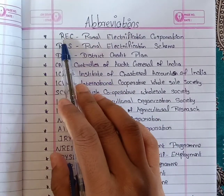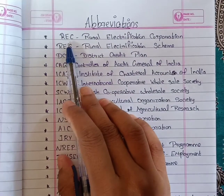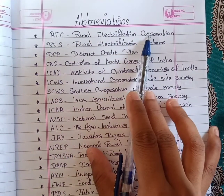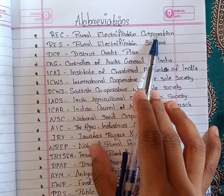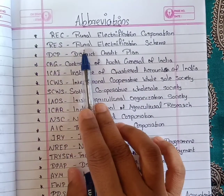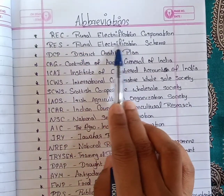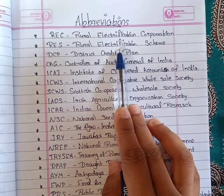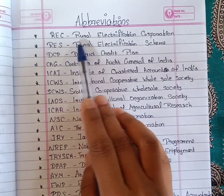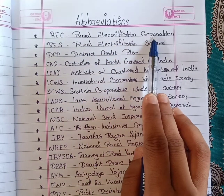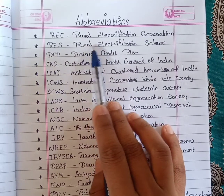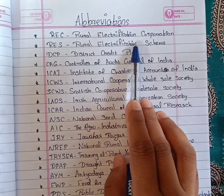The first abbreviation is REC — Rural Electrification Corporation. Next is RES — Rural Electrification Scheme. So REC means Rural Electrification Corporation and RES means Rural Electrification Scheme.